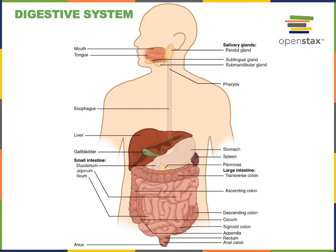Mechanical digestion is chopping up large pieces of food into smaller particles, while chemical digestion is breaking the chemical bonds in large molecules to release smaller nutrient molecules. Digestive enzymes catalyze the chemical reactions for chemical digestion. The mouth is also important for initiating the swallowing process. Swallowing is also known as deglutition, and the voluntary phase is initiated in the mouth as the tongue pushes the food back into the throat.